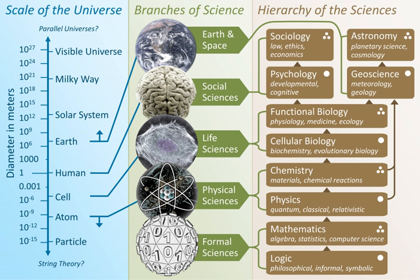The branches of science, also referred to as sciences, are commonly divided into three major groups. Formal sciences — the study of mathematics and logic — which use an a priori, as opposed to factual, methodology.